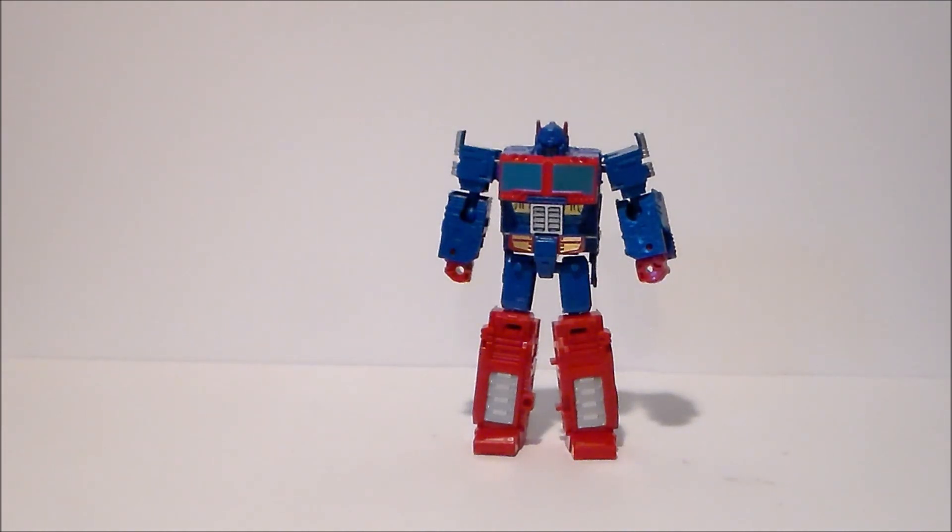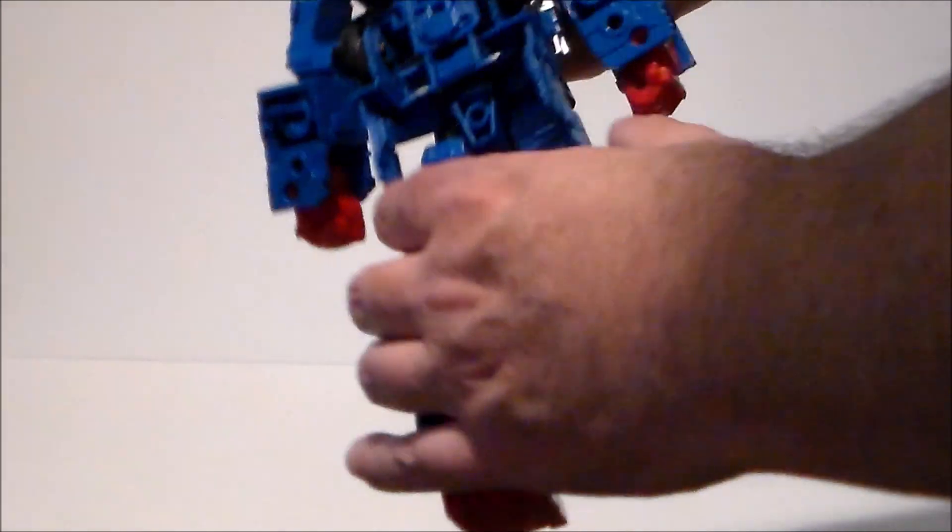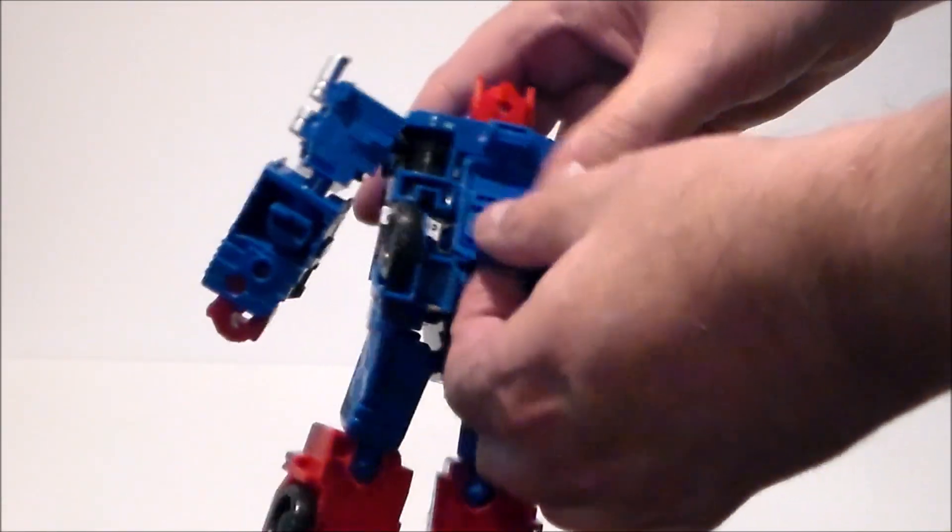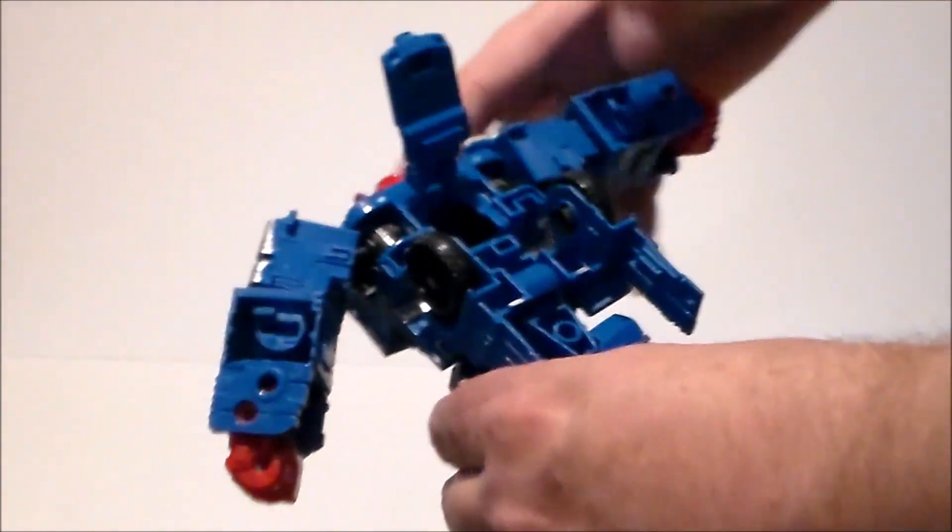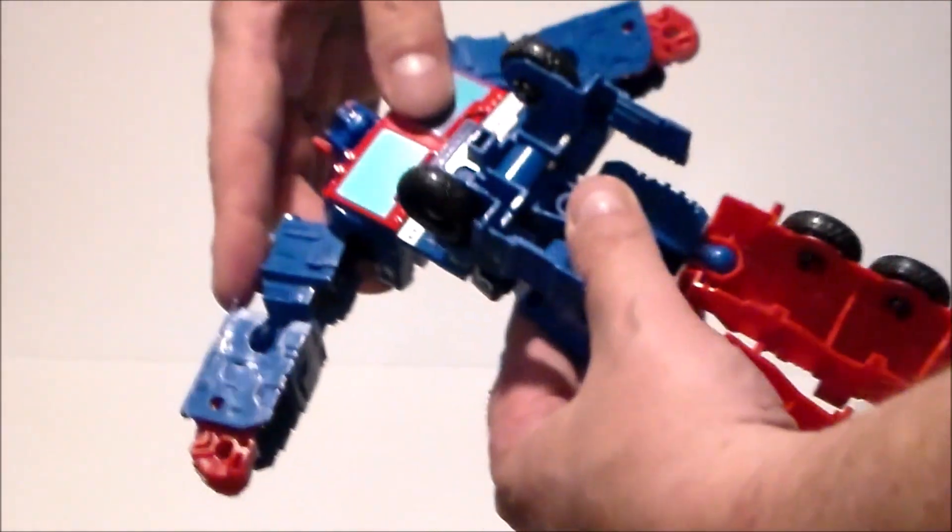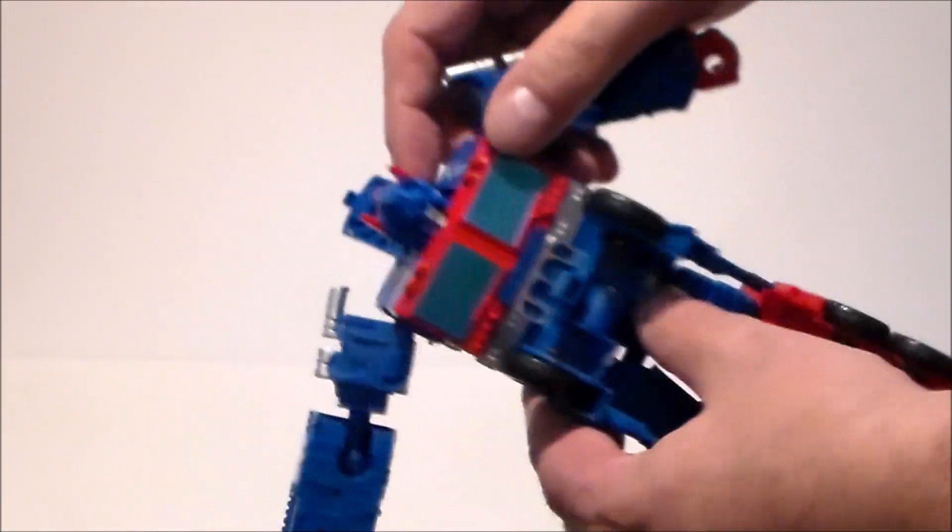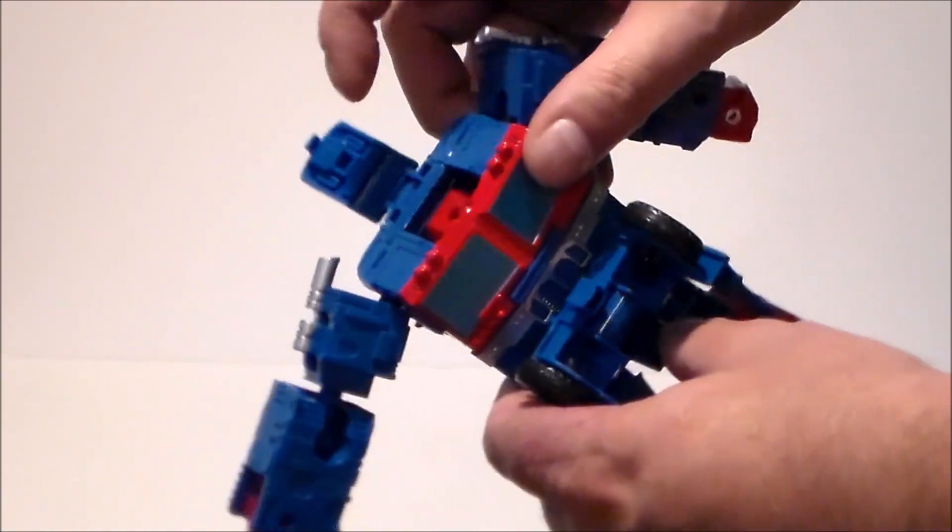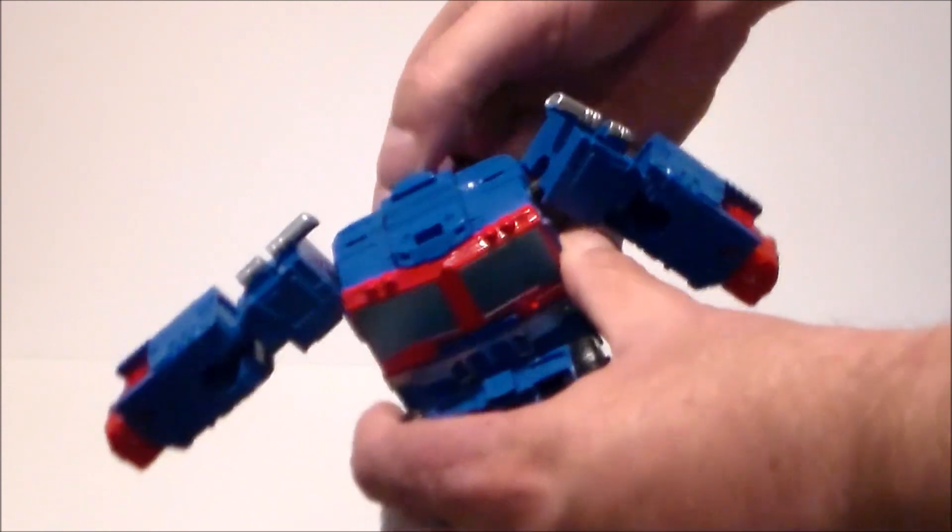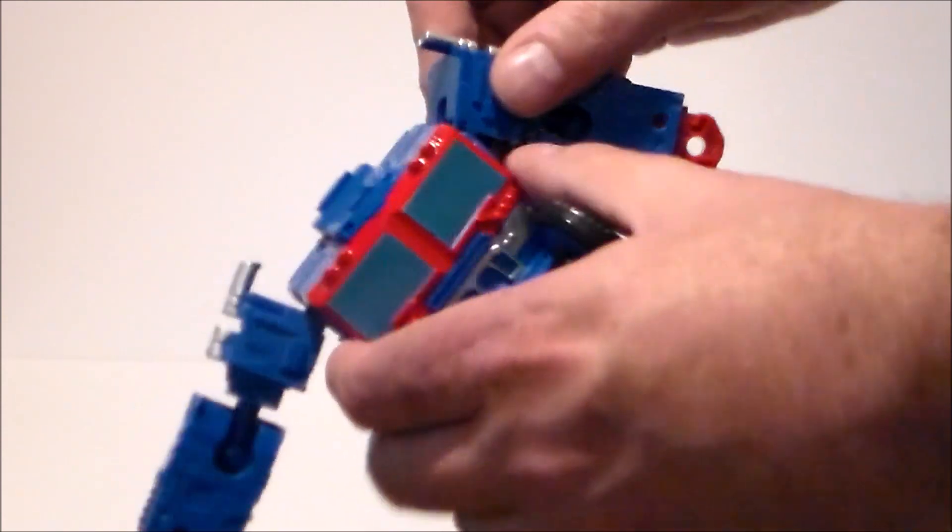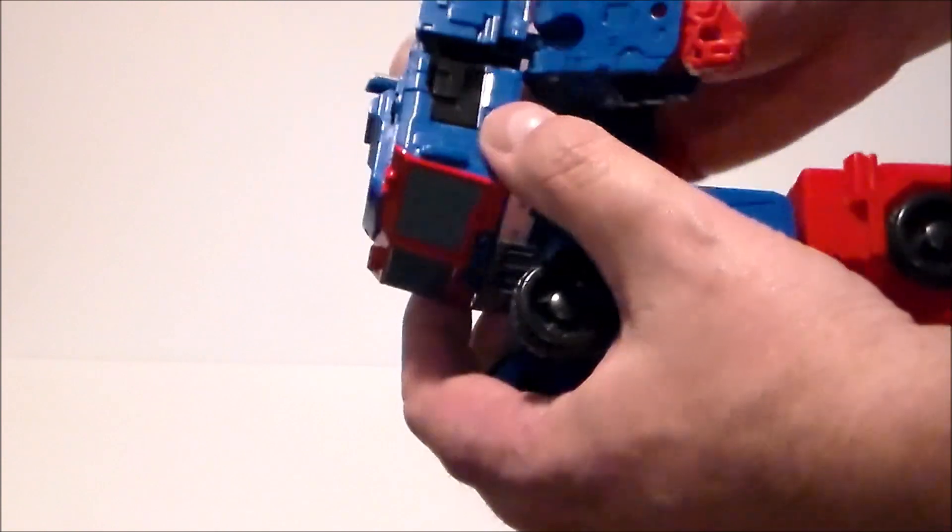So now we're going to take the figure and we're going to lift its back panel piece upward like that. Splay the arms out a little bit and we're going to twist the upper body around. And then this head piece is going to rotate inward and we're going to cover the top with this panel right here, just like that. We're going to move the arms back and out of the way a little bit.